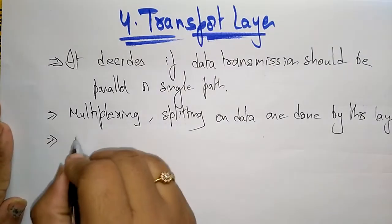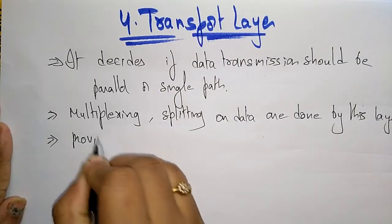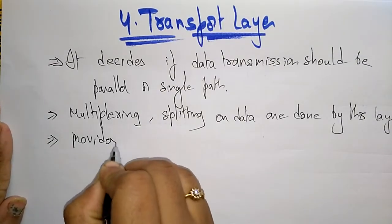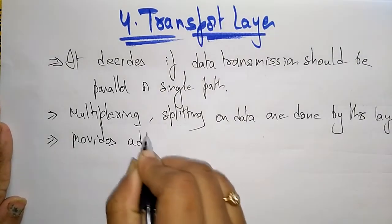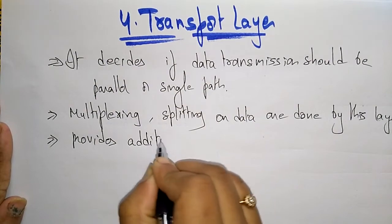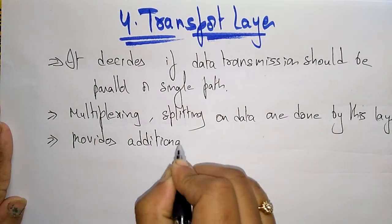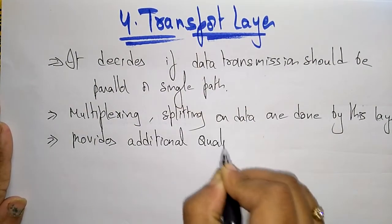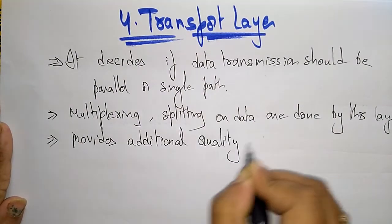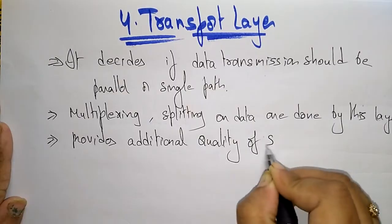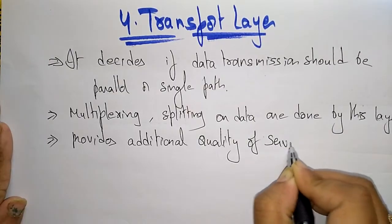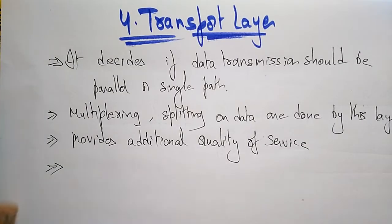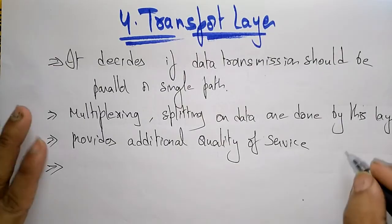Next, the transport layer provides additional quality of service. This is another important function it performs on top of path selection and multiplexing.